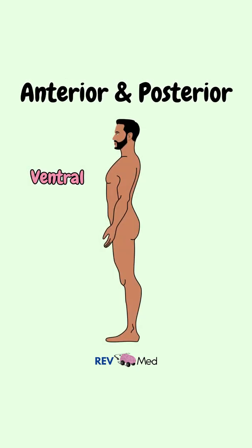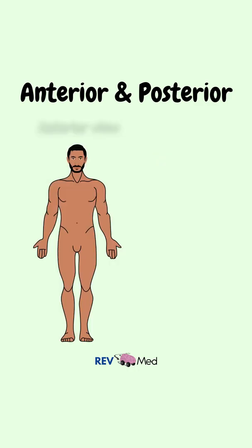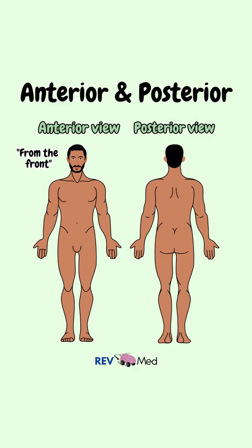Sometimes you'll see the words ventral and dorsal — don't be confused. Ventral just means anterior, and dorsal just means posterior. We will also use anterior to say we are looking at the body from the front — it's an anterior view. And the posterior view means we are looking at the body from the back.